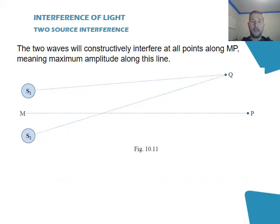Now that line MP, being equidistant from both points, means that crests and troughs will arrive at exactly the same time along any point on this line. So that means we've got constructive interference of maximum amplitude at the line MP.